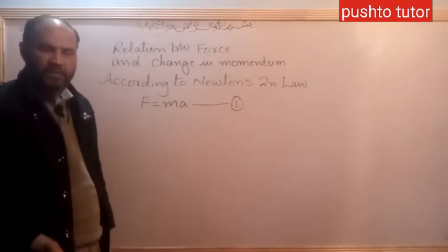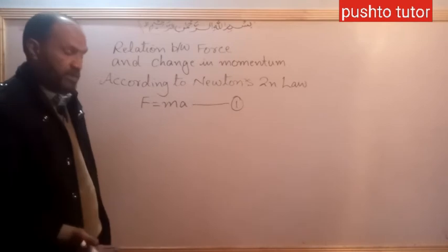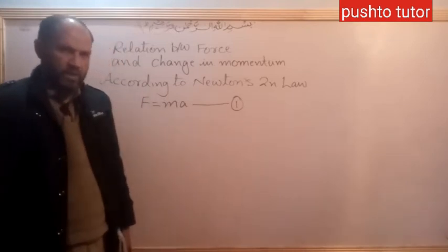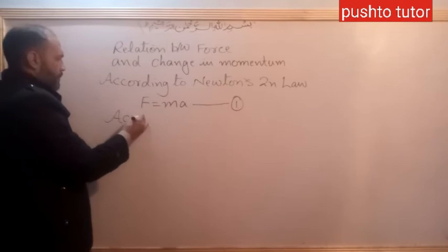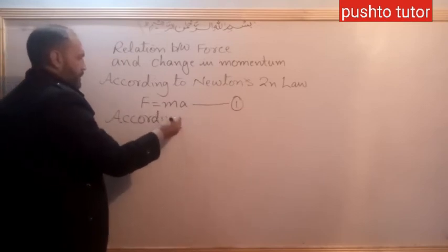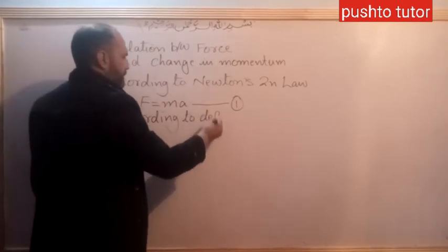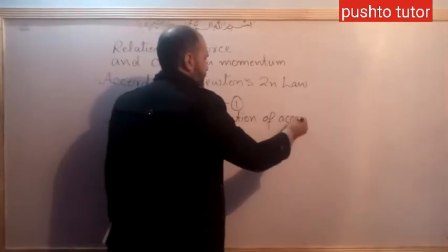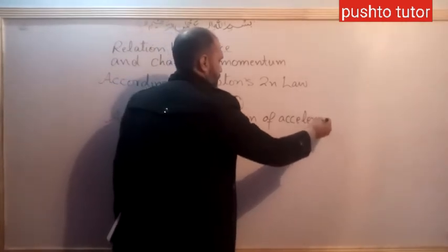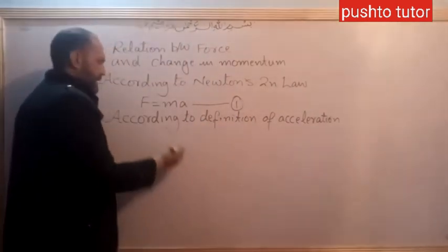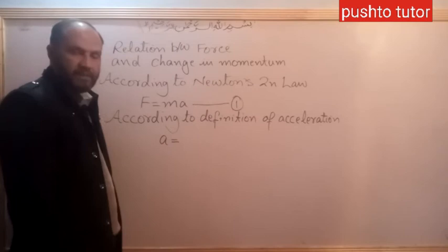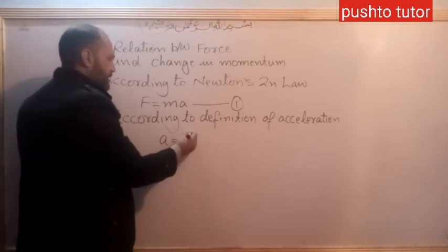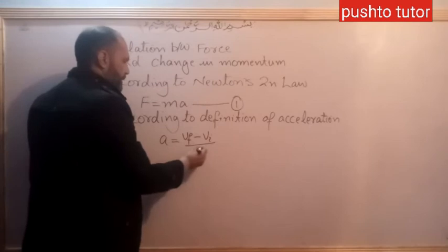According to the definition of acceleration, the rate of change of velocity is called acceleration. That is, acceleration equals Vf minus Vi divided by T.